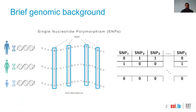Let us start with a brief genomic background. The human DNA consists of nucleotides that contain our genetic information. Those nucleotides are represented by letters such as A, T, C, and G. However, at some specific positions of our DNA, humans share different genetic information, and those positions are called single nucleotide polymorphisms, or SNPs.